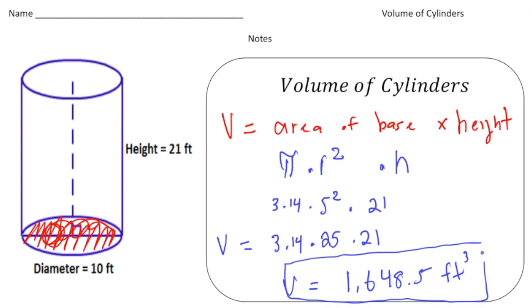To find the volume of a cylinder, it's pretty simple. Just find the area of the base, which is a circle, and multiply it by the height.